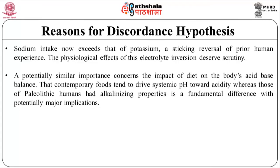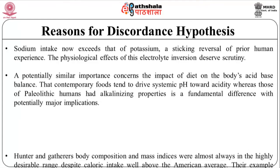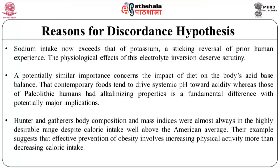A potentially similarly important concern is the impact of diet on the body's acid-base balance. Contemporary foods tend to drive systemic pH towards acidity, whereas those of Palaeolithic humans had alkalinising properties — a fundamental difference with potentially major implications. The foraging existence necessitated high energy throughput. Hunter-gatherers' body composition and mass indices were almost always in the highly desirable range, despite caloric intake well above the American average. This example suggests that effective prevention of obesity involves increasing physical activity more than decreasing caloric intake.